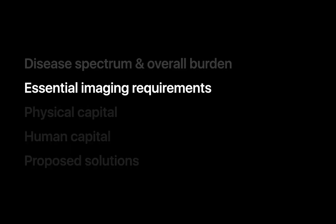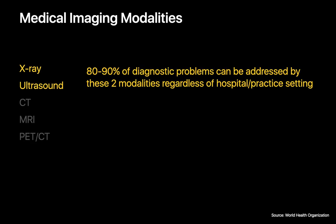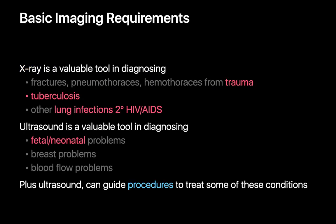Now let's talk about the essential medical imaging requirements of most low-income countries. We've learned that five of the most pressing healthcare issues are tuberculosis, AIDS-related lung infections, maternal-infant health, trauma, and breast cancer. While the complete medical imaging arsenal is composed of five major imaging modalities, the WHO estimates that x-ray and ultrasound alone can probably address 80-90% of diagnostic situations in low-income countries — which probably isn't surprising when you consider that x-rays are an important tool in the diagnosis of traumatic injuries, TB, and lung infections in the setting of HIV-AIDS, and that ultrasound is an important tool in the assessment of fetal and neonatal problems, not to mention some breast and vascular issues too.